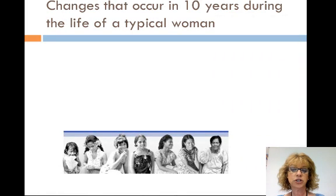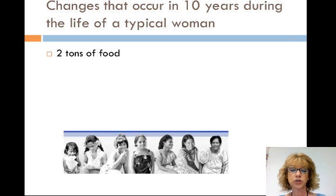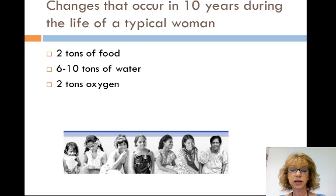If we look at changes that occur during 10 years in the lifetime of a typical woman weighing about 132 pounds, or around 60 kilograms: during that 10 years she'll eat about 2 tons of food, drink 6 to 10 tons of water, use 2 tons of oxygen, and metabolically generate 7 million kilocalories of heat — enough to warm 90 tons of water from room temperature to boiling. The same quantity of materials and heat must be lost from the woman's body to maintain size, temperature, and chemical composition.